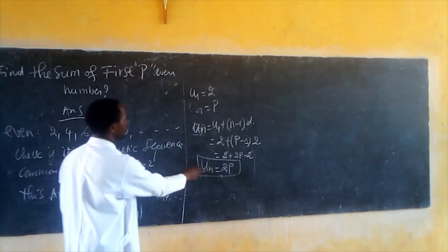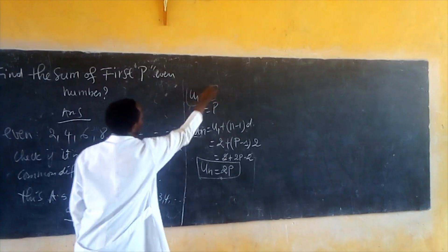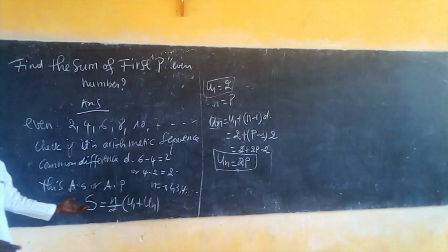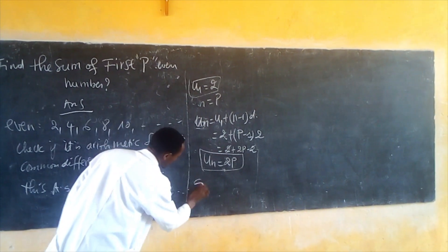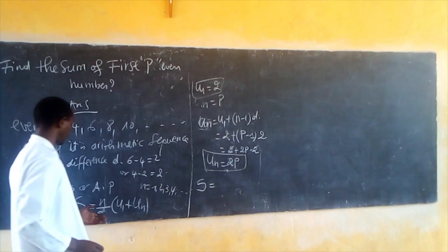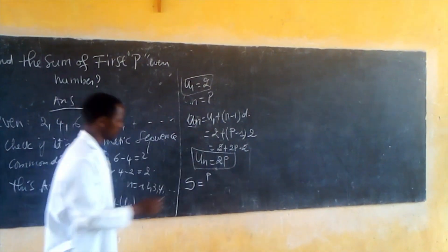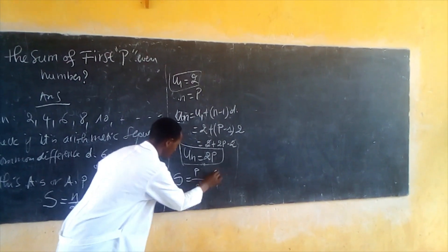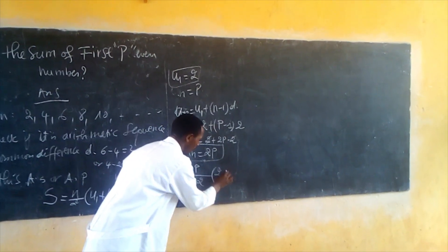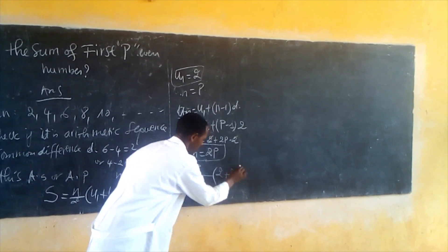Replace the value of Un into the sum formula. The sum equals P divided by 2, times (2 plus 2P).